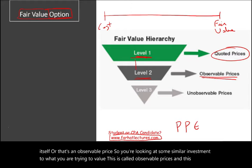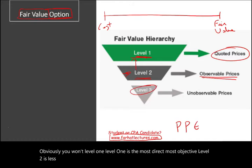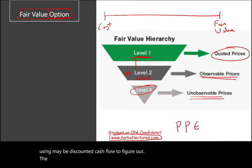Obviously you want level one. Level one is the most direct, most objective. Level two is less objective. And level three — you are looking at unobservable prices. Here, you are using maybe discounted cash flow to figure out the fair value of that asset or of that liability. So those are three levels of hierarchy.